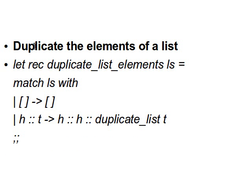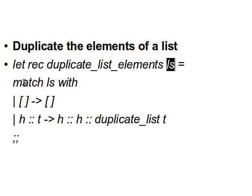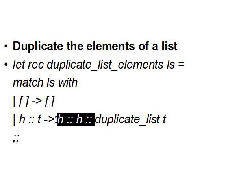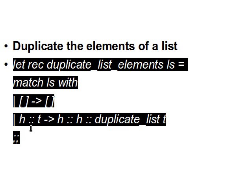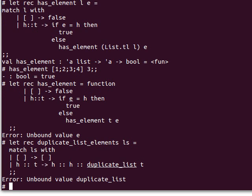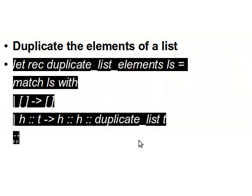Now in this function we try to duplicate the elements of a list. So if I give you a list of one, two, three then we need to have one, one, two, two, three, three. The function `let rec duplicate_list_elements ls` takes my list. We match it: if it's an empty list then return empty; if it has a head and tail, we attach the head twice — duplicating the element — into the result, then call the function recursively with the tail.